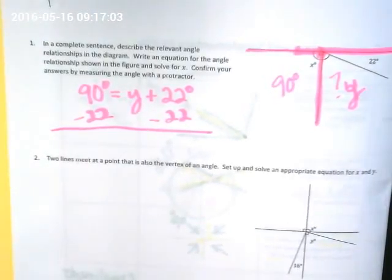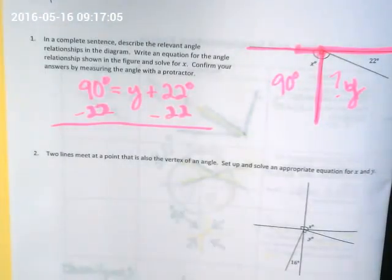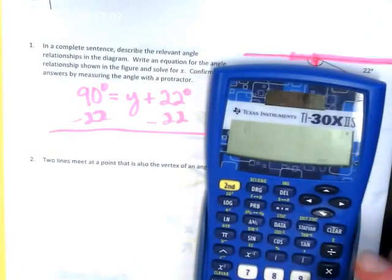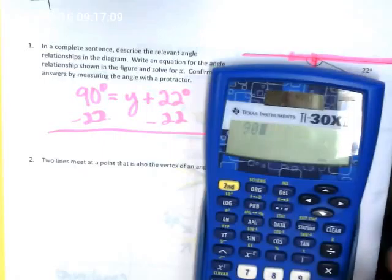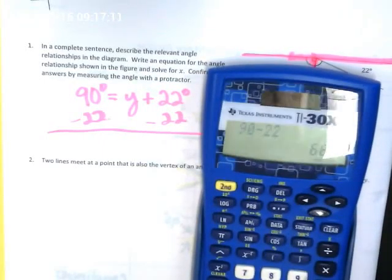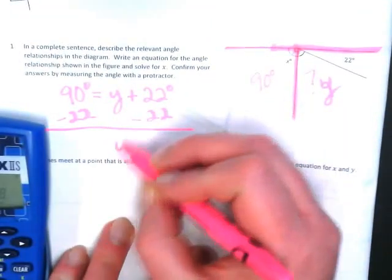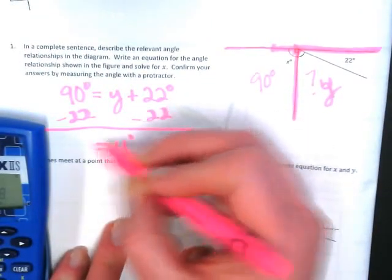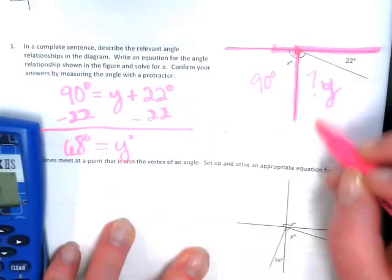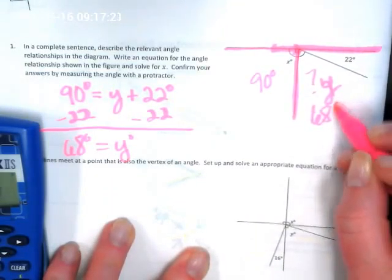68. Let's just double check though. 90 minus 22, we get 68 degrees. So then we can come back and say our Y degrees is equal to 68 degrees. So this section is 68 degrees.